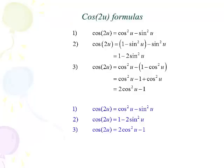For cosine 2u, we will always give you the first form: cosine squared minus sine squared. But there are two other useful substitutions using the Pythagorean identity cosine squared plus sine squared equals 1. Substituting cosine squared equals 1 minus sine squared gives cosine 2u equals 1 minus 2 sine squared u. Substituting sine squared equals 1 minus cosine squared gives cosine 2u equals 2 cosine squared u minus 1. All three are valid substitutions for cosine 2u.